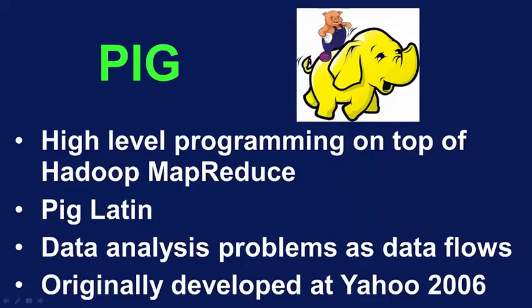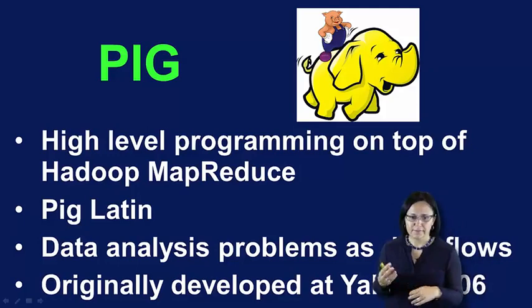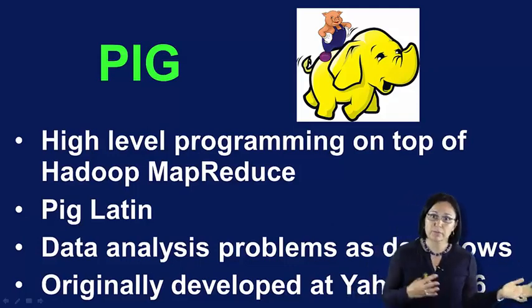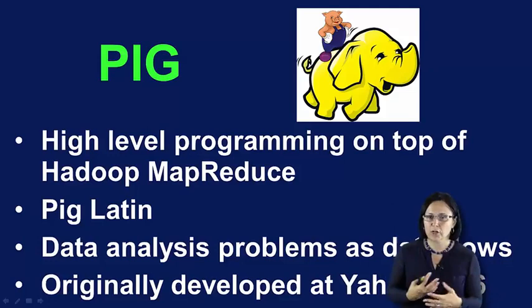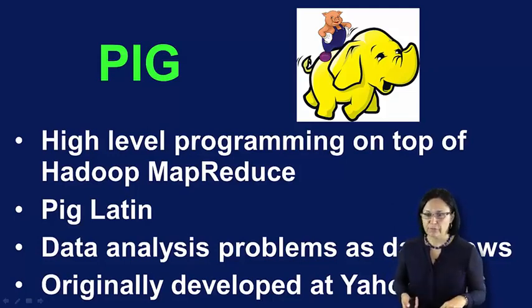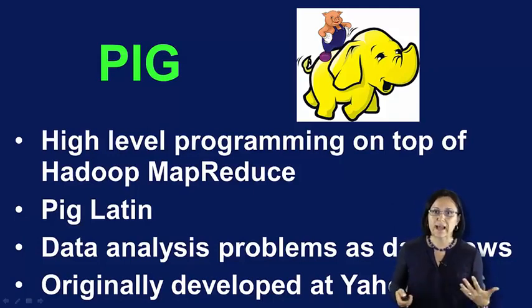Next, let's talk about Pig. It's a scripting language — a high-level platform for creating MapReduce programs using Hadoop. This language is called Pig Latin and it excels at describing data analysis problems as data flows. Pig is complete in that you can do all required data manipulation within Apache Hadoop just by using Pig. Through user-defined functions, Pig can involve code from many different languages like JRuby, JPython, and Java. Conversely, you can execute Pig scripts in other languages, making Pig a component to build much larger, more complex applications that can tackle real business problems.